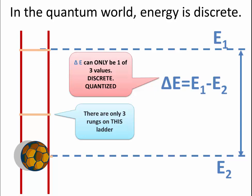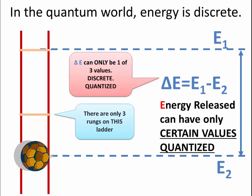But this change in energy can only be one of three discrete values. In other words, it's not continuous, it's discrete, or we say quantized. So when this energy gets released in some form, it can only have certain values which correspond to the energy changes inside this ladder.